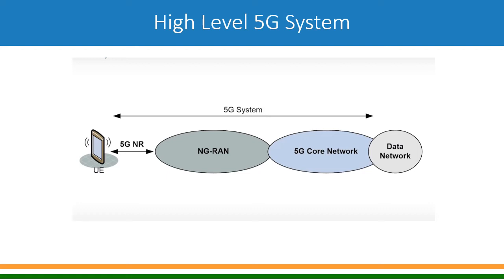Now let us look at the high-level 5G system. You have UE — user equipment, the 5G mobile. The radio part is called NG-RAN, New Generation Radio Access Network. Then you have 5G Core, which connects to a data network. In 4G this was called Packet Data Network; in 5G it is simply called data network, because it can support any kind of data network — even structured data is supported. The entire thing is called the 5G system.